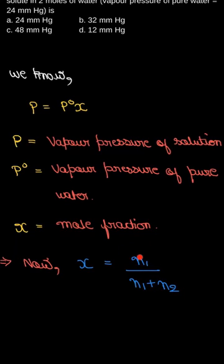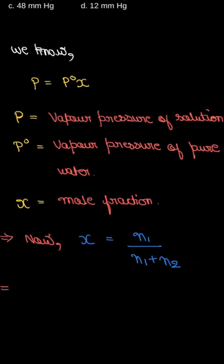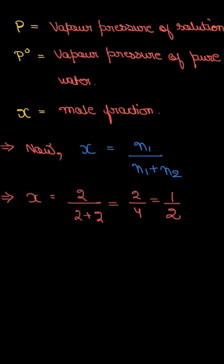So what is N₁? N₁ is the moles of solute, that is given to us 2 moles. N₂ is the moles of solvent which is also given to be 2. So the mole fraction can be calculated as X is equal to 2 upon 2 plus 2 which gives the value of half.